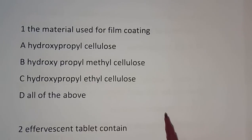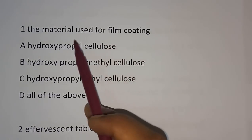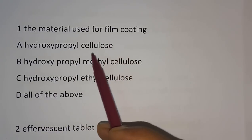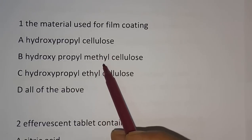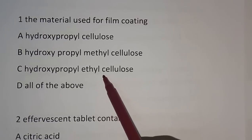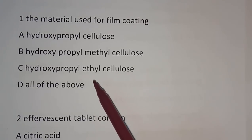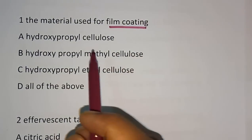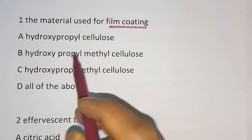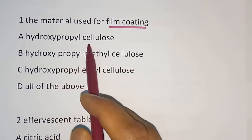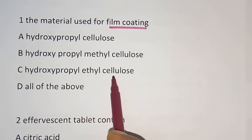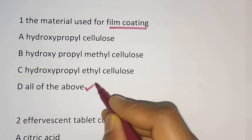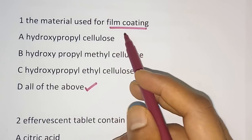Question number 1: The material used for film coating. Options are hydroxypropylcellulose, hydroxypropylmethylcellulose, and hydroxypropylmethylcellulose phthalate. The correct answer for this question is all of the above. These all three items are used for film coating.